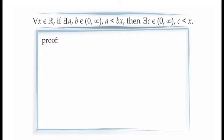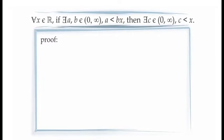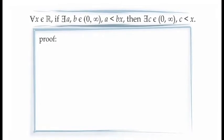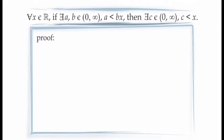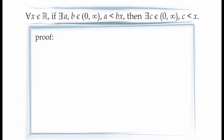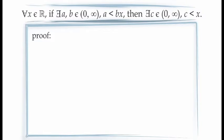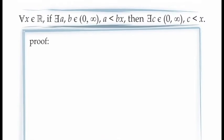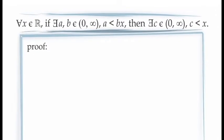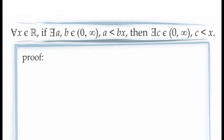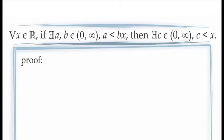For our first example, we're going to prove the statement: for all x in the real numbers, if there are values of a and b in the interval from 0 to infinity for which a is less than b times x, then there must be at least one value of c in the interval from 0 to infinity for which c is less than x. For practice, we're going to try to prove this in two ways.